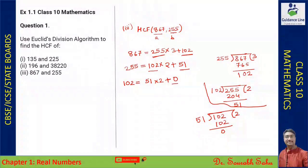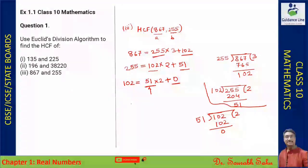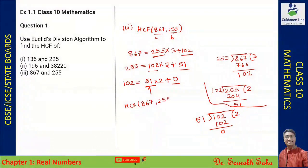As the remainder is 0, the value of b is the HCF. So the HCF of 867 and 255 is 51.